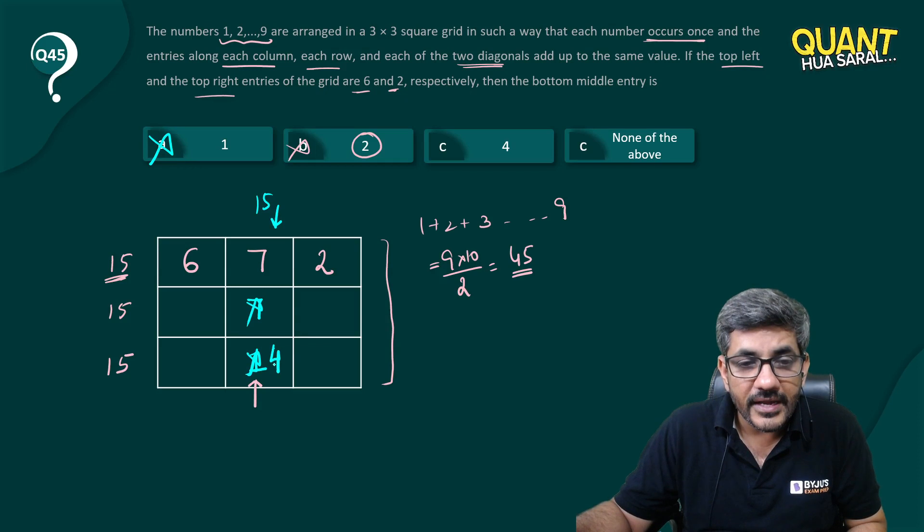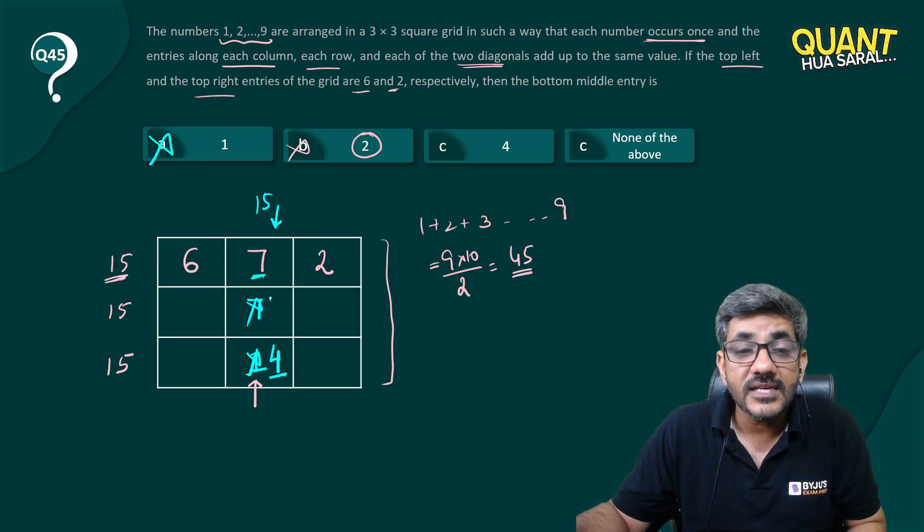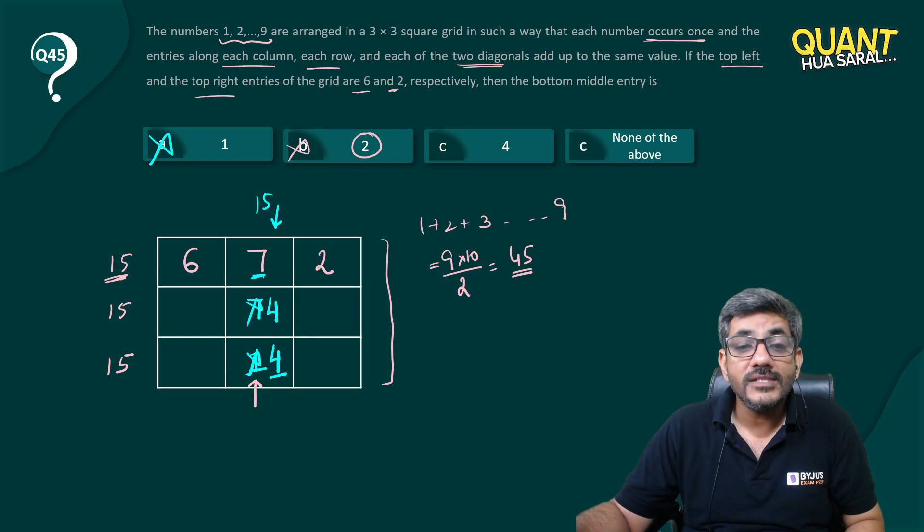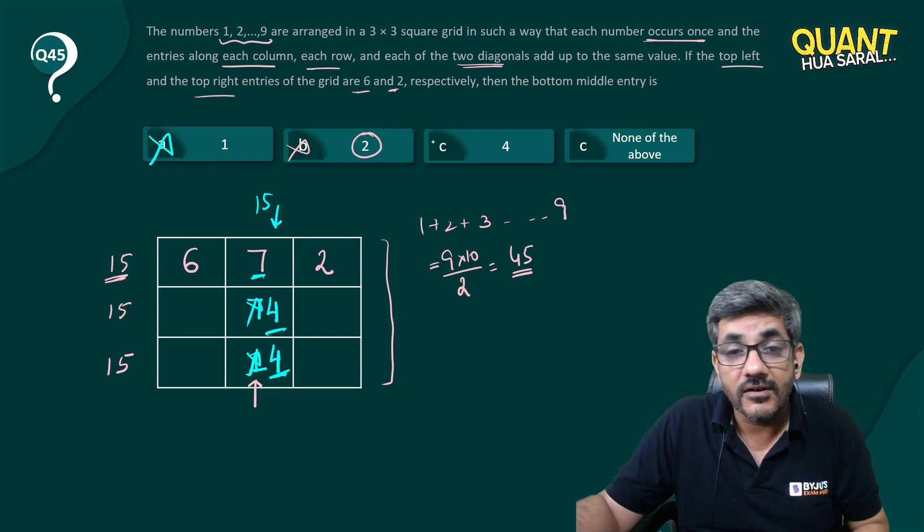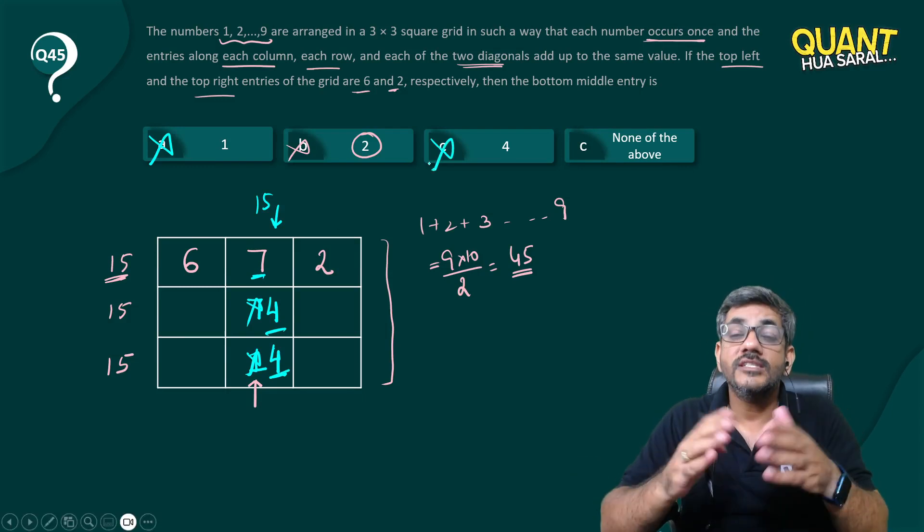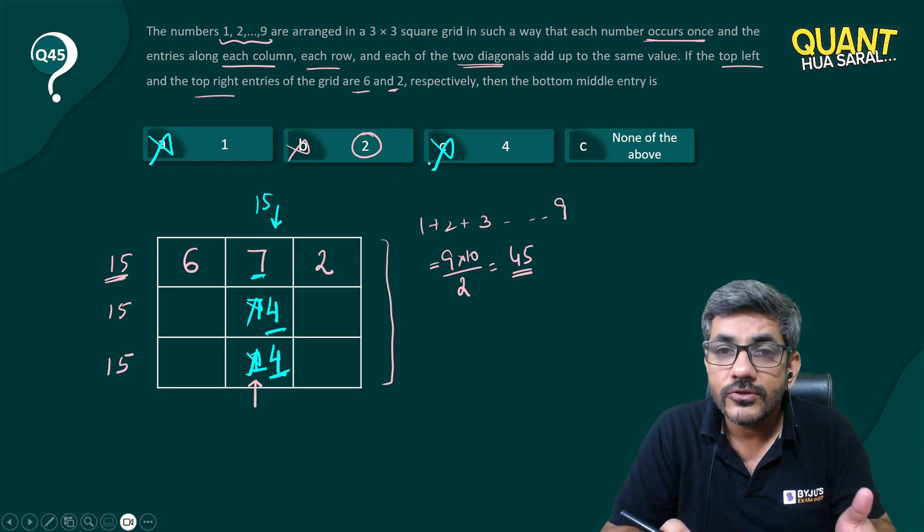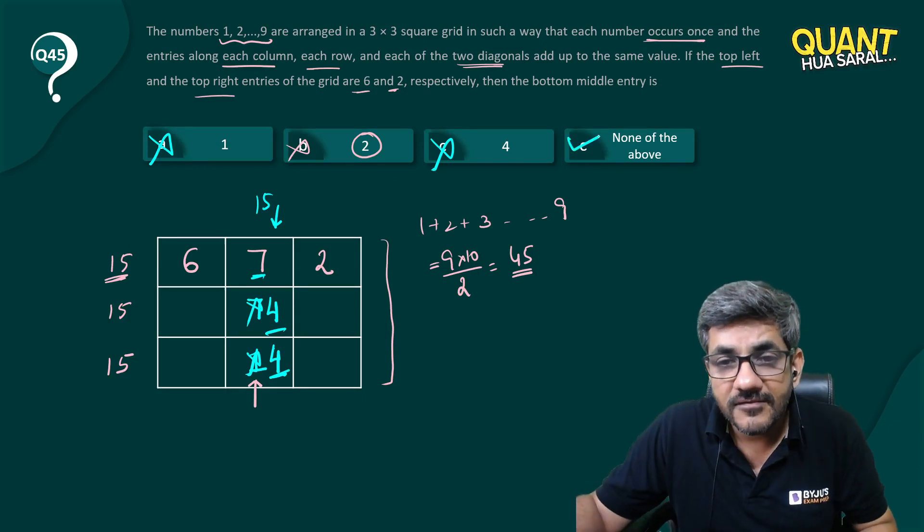What if it is 4? If I write a 4 over here then 7 plus 4 is 11. 11 plus what is 15? That will be again 4. So once again I have to write 4 over here which also is not possible. I cannot write the same value twice. So by that logic even 4 is gone. So 2 was anyway is gone. 1 and 4 are also gone. What are we left with? We are left with none of these.